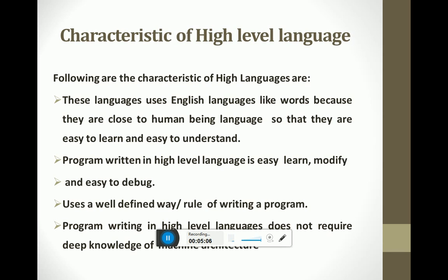The characteristics of high-level languages are: they use plain English words for writing programs, so a programmer or reader can easily learn, understand, and modify them. Programs written in high-level languages are easy to learn, easy to modify, and easy to debug. Debugging is the process of finding and removing errors. High-level languages use well-defined rules for writing programs and do not require deep knowledge of computer architecture.